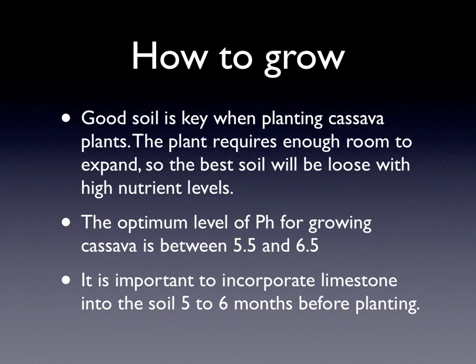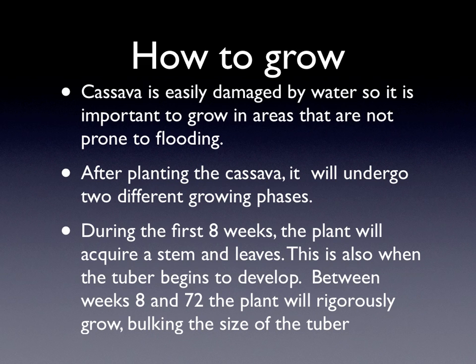Good soil is key when planting cassava plants. The plant requires enough room to expand, so the best soil will be loose with high nutrient levels. An optimum level of pH for growing cassava is between 5.5 and 6.5. It is important to incorporate limestone into the soil five to six months before planting. Cassava is easily damaged by water, so it is important to grow in areas that are not prone to flooding.